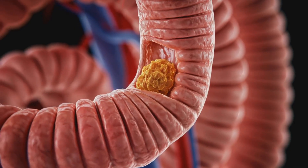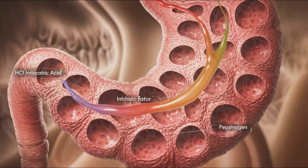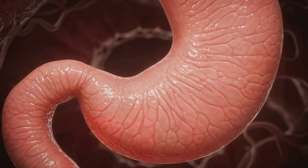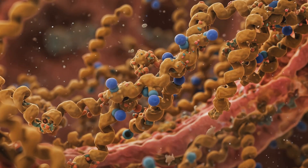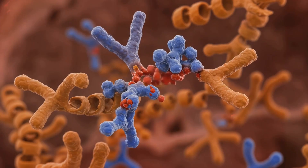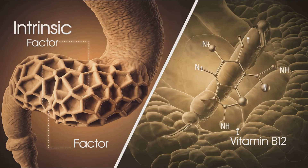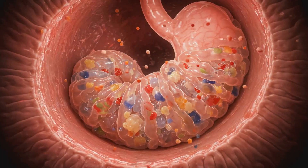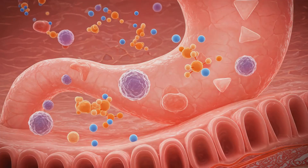The esophagus uses peristalsis to deliver food to the stomach. In the stomach, hydrochloric acid denatures proteins and pepsin begins proteolysis. Intrinsic factor supports vitamin B12 absorption, and chyme formation occurs via muscular churning. Gastrin stimulates acid secretion and motility, while histamine and acetylcholine further amplify parietal cell activity and somatostatin provides negative feedback.